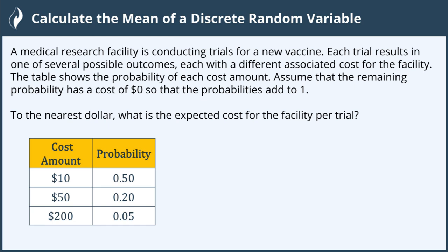A medical research facility is conducting trials for a new vaccine. Each trial results in one of several possible outcomes, each with a different associated cost for the facility. The table shows the probability of each cost amount. Assume that the remaining probability has a cost of zero dollars so that the probabilities add to one. To the nearest dollar, what is the expected cost for the facility per trial?